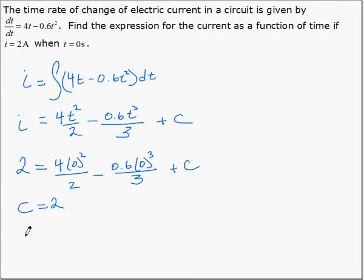So we can write our expression for current. We should simplify: 4 over 2 is 2t squared, 0.6 over 3 is 0.2t cubed. So i equals 2t squared minus 0.2t cubed plus 2. That's our expression for current.